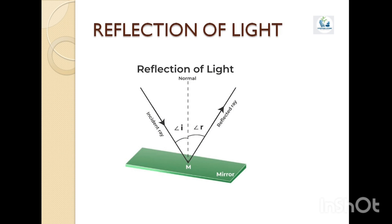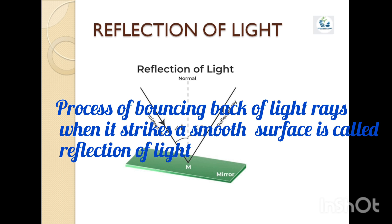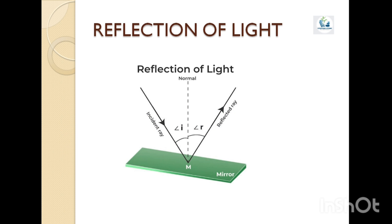We can see non-luminous objects because they reflect light falling on them into our eyes. Now, what is reflection of light? The process of sending back the light rays which fall on the surface of an object is called reflection of light. Remember that objects having polished, shining surfaces reflect more light than objects having unpolished and dull surfaces.